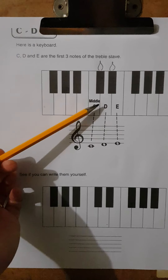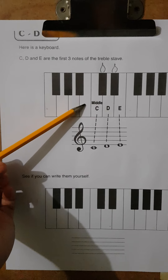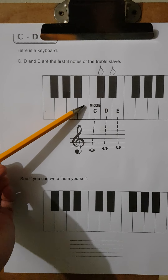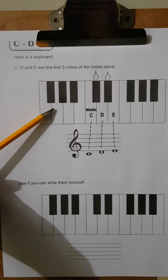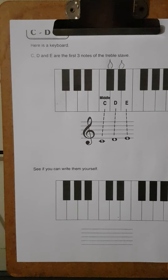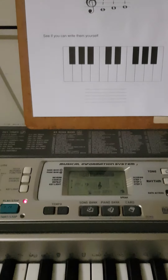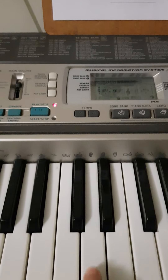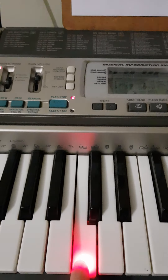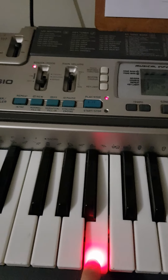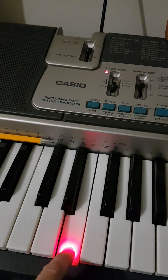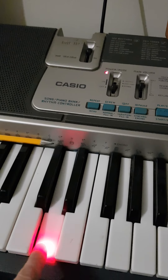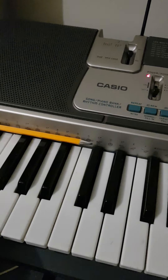Going backwards, so if this is C, before C in the alphabet comes B, then A, then G, F, and so it goes down. Playing on the keyboard, here is my donkey D going down: C, B, A, G, F, E, D — there are my two donkey ears — C, and so it goes down.